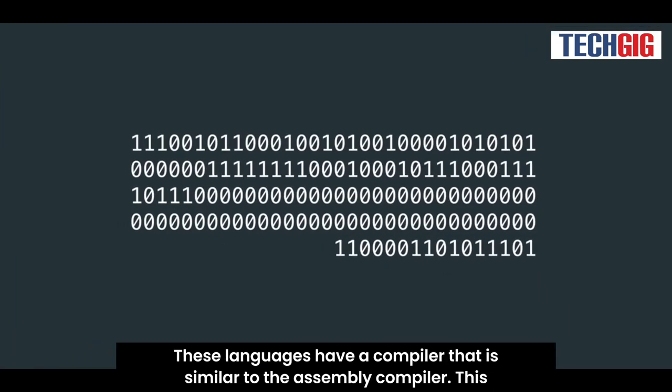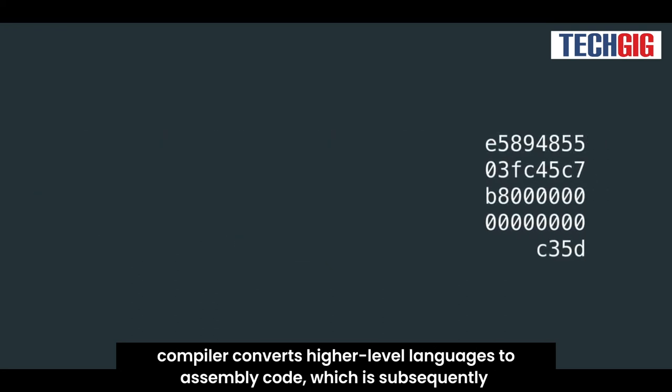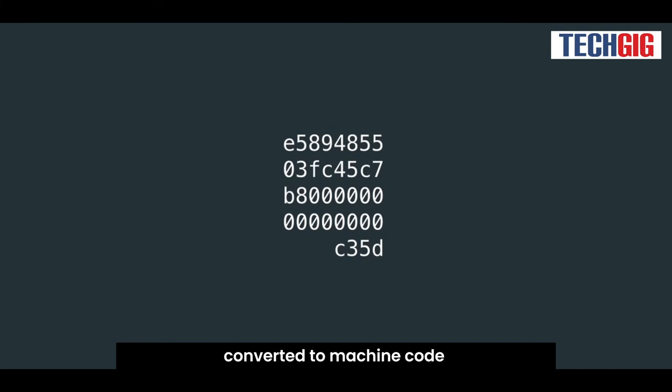These languages have a compiler that is similar to the assembly compiler. This compiler converts higher-level languages to assembly code, which is subsequently converted to machine code.